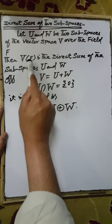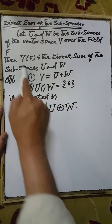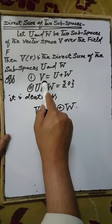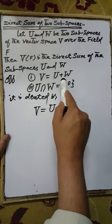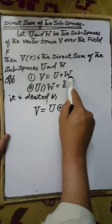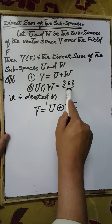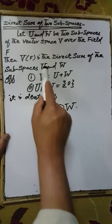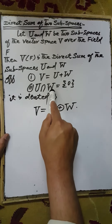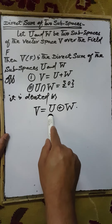The vector space V is the direct sum if it satisfies the condition that V is obtained from the sum of the subspaces U and W, and there is only the additive identity element of the vector space V over the field F in common between the subspaces U and W.